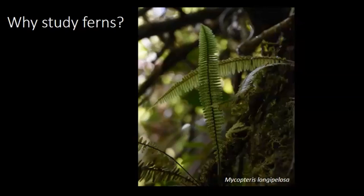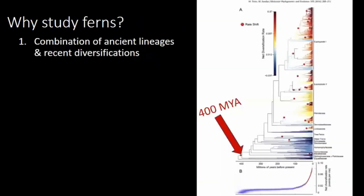I'd like to share some of the reasons I find ferns as a study group so interesting. With ferns, we get a combination of ancient lineages and recent diversifications. Their origin is traced back to the mid-Silurian, about 400 million years ago, with an early Carboniferous origin for the Leptosporangiate ferns, which includes most of the tree. Most of the derived fern families appeared in the Cretaceous, persisted for millions of years, and then rapidly diversified in the Cenozoic. You really get all ends of the spectrum here with ferns.